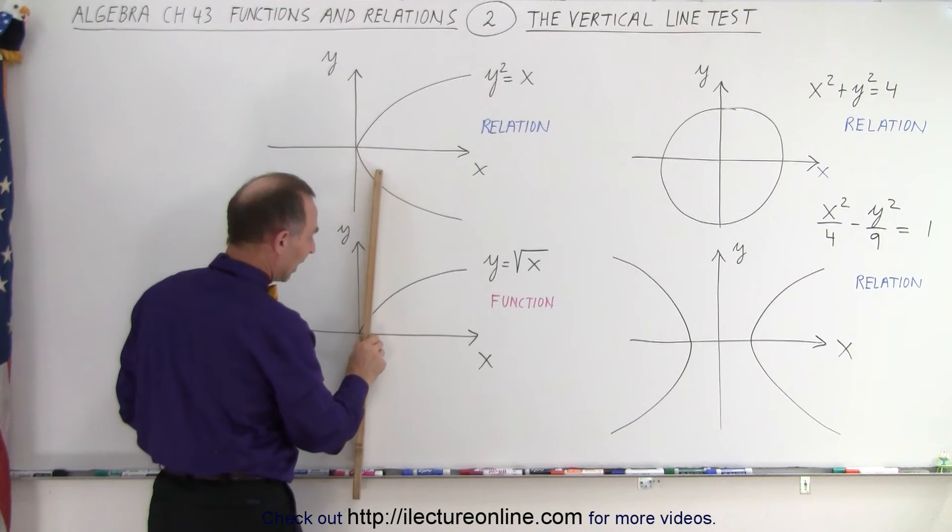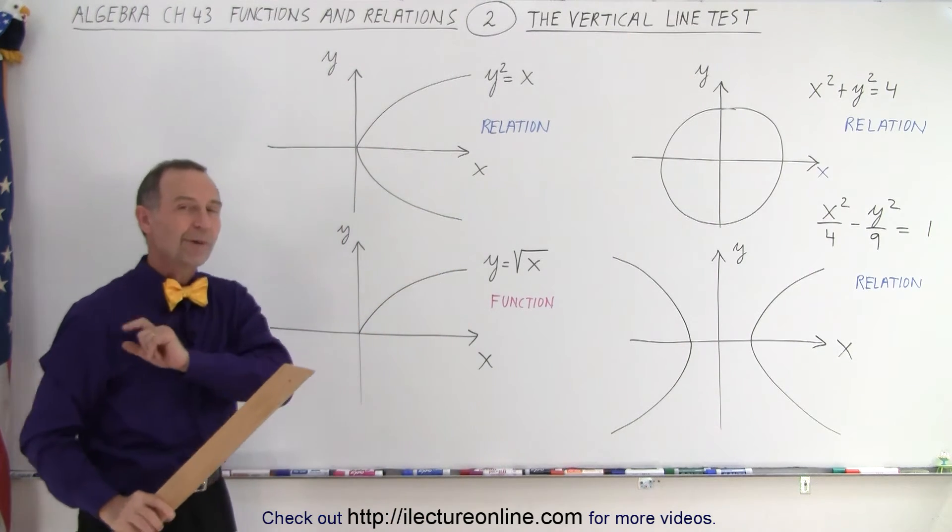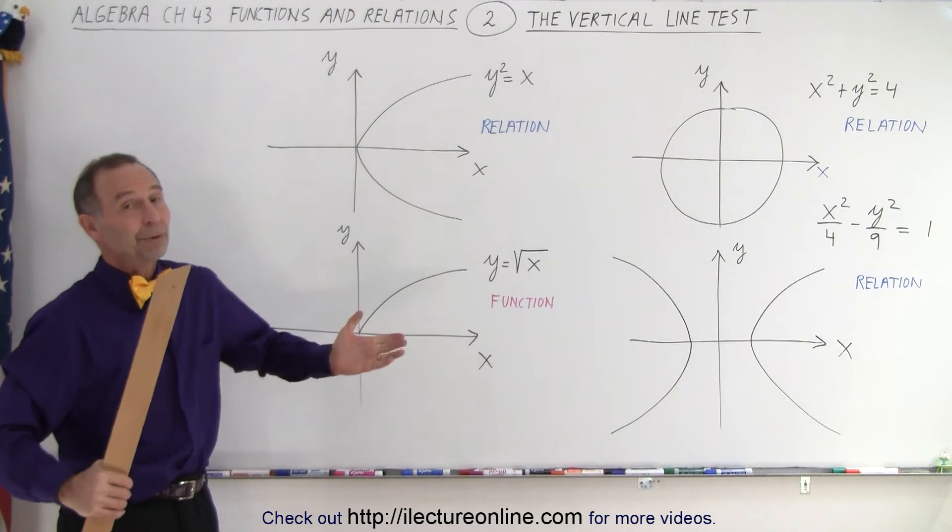Now, when I do my vertical line test, at any one point, it only crosses the vertical line once, which makes it a function and not a relation. It's as simple as that.